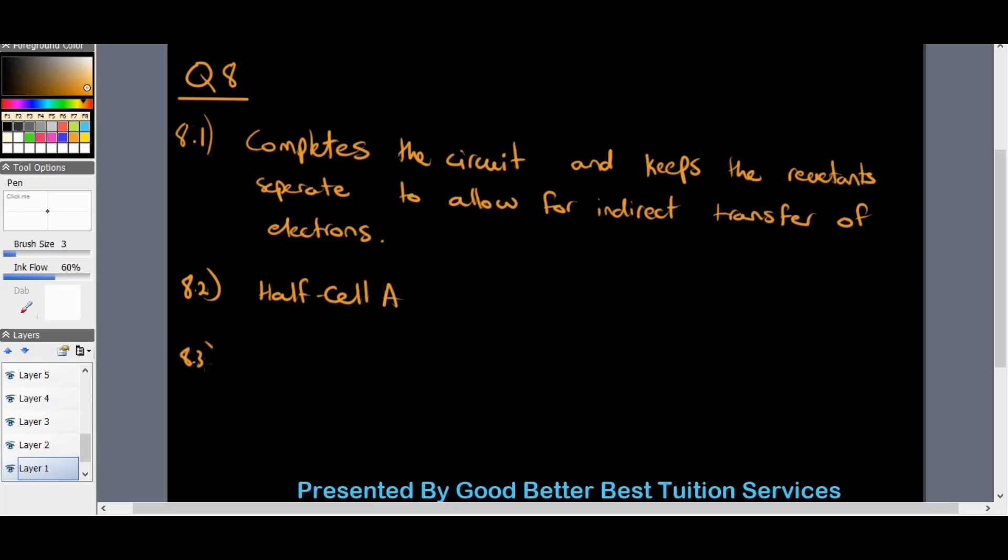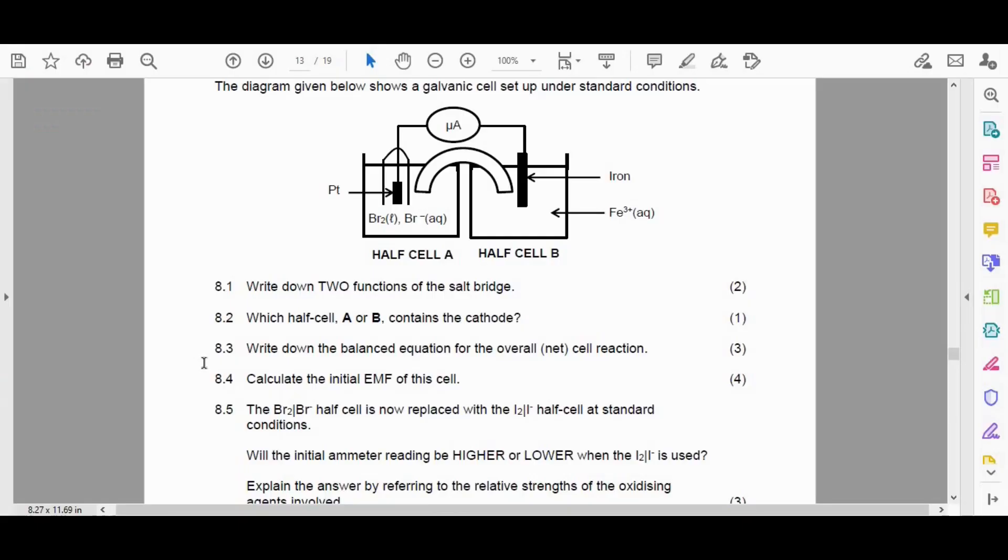8.3 rather. Write down the balance equation for the overall net reaction. Okay, so we know that our cathode is what looks like, because we have a cathode electrode, I mean platinum electrode there.